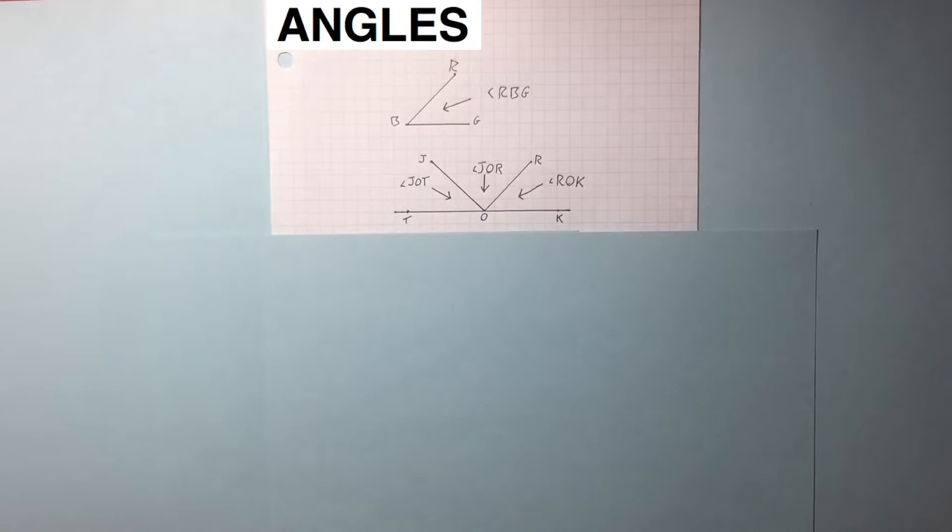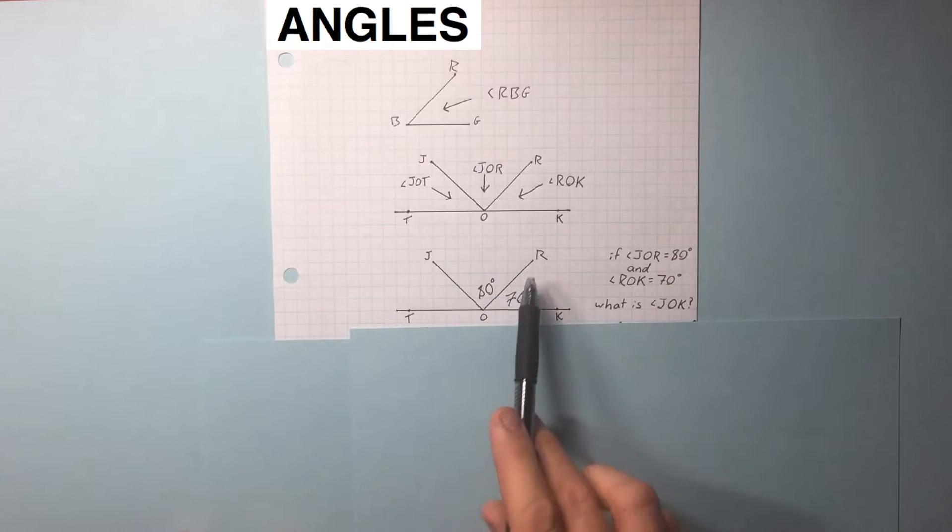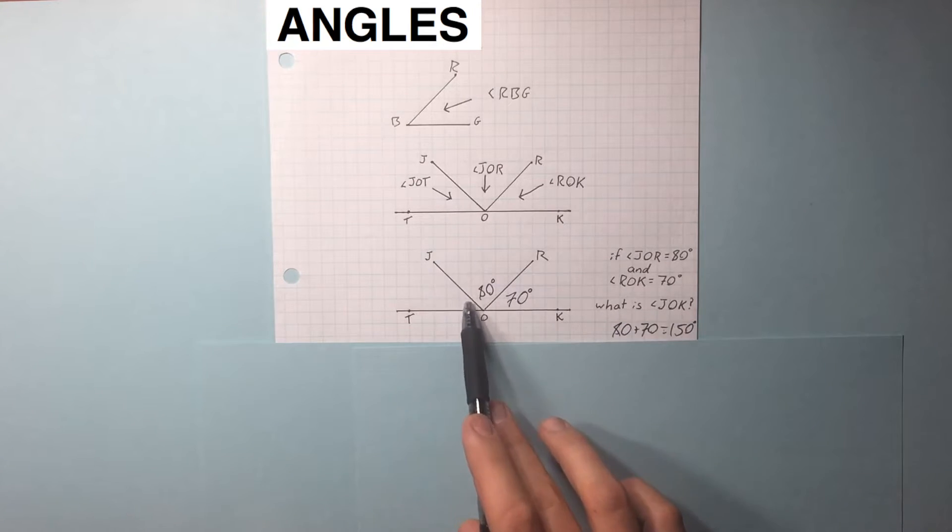Here's an example. Take a second to make sure that you're totally solid on how this works. Let's look at this example. Angle JOR is 80, angle ROK is 70. They're asking for angle JOK, and that's this large angle right here, JOK. You take the first angle, add it to the second angle, and then you get the larger angle JOK. So we have 80 plus 70, 150.